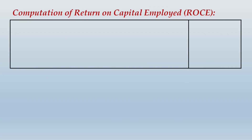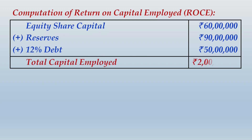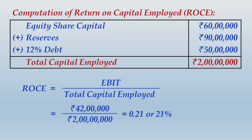In the solution, first compute the rate of return on capital employed (ROCE) at present. Total capital employed: equity share capital rupees 60 lakhs + reserves rupees 90 lakhs + 12% debt rupees 50 lakhs (derived as 6 lakhs ÷ 12%) = rupees 200 lakhs (2 crores). ROCE = EBIT ÷ total capital employed = 42 ÷ 200 = 21%.